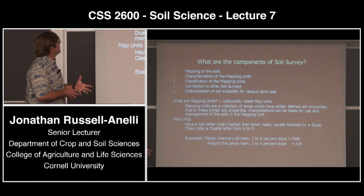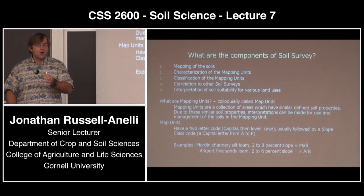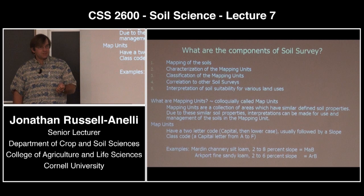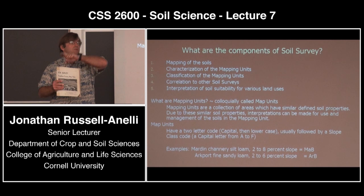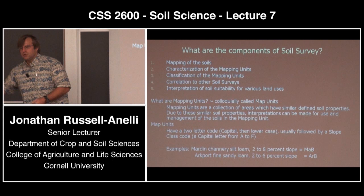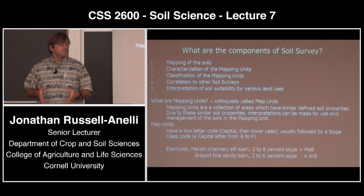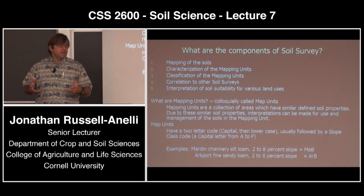What's in these products? First, the map. Second, the characterization of the units — we call them mapping units. Third, the classification of each one of these units. It's also the correlation of this soil — so Tompkins County's soil survey — to all the surrounding counties, and all those surrounding counties to the rest of the state, and from the state to the rest of the country. You don't want a map unit here that's basically the same soil somewhere else but we're calling it something different. And then the interpretations for suitability of a variety of different uses.